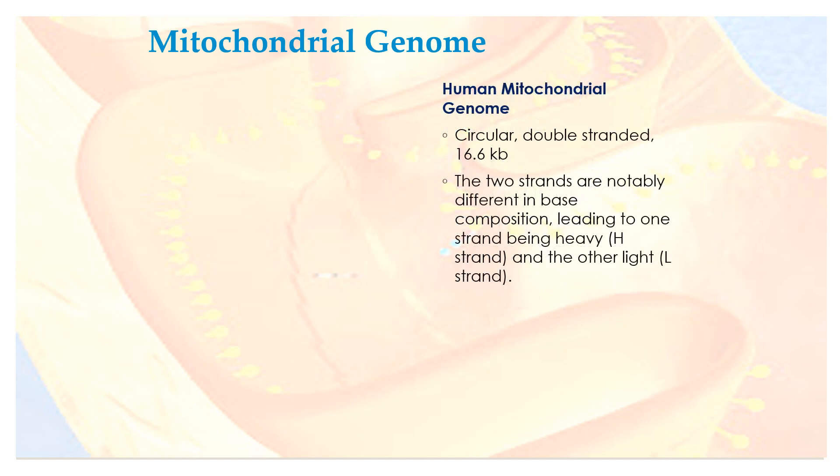The human mitochondrial genome is circular and double-stranded, approximately 16.6 KB in size. The two strands are notably different in base composition, leading to one strand being designated the heavy strand, or H strand, and the other the light strand, or L strand.